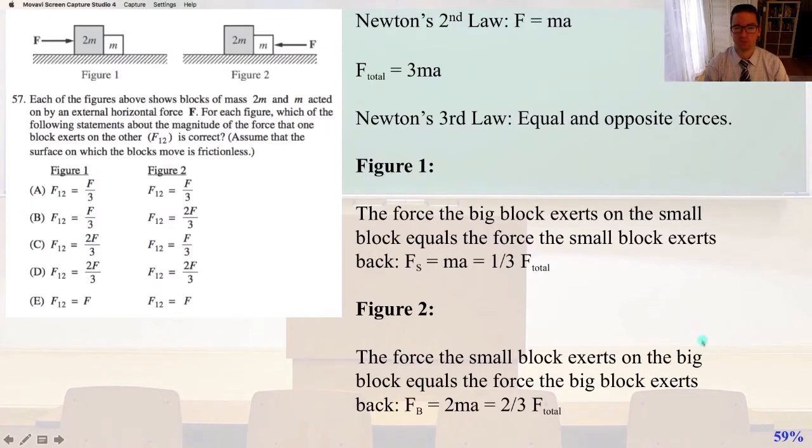Number 57. Each of the figures above shows blocks of mass 2m and m acted on by an external horizontal force F. For each figure, which of the following statements about the magnitude of the force that one block exerts on the other, F12, is correct? Assume that the surface on which the blocks move is frictionless. So, first, we're going to apply Newton's second law, F equals ma. And our total force, therefore, equals 3 ma. And that's the 2m plus m.